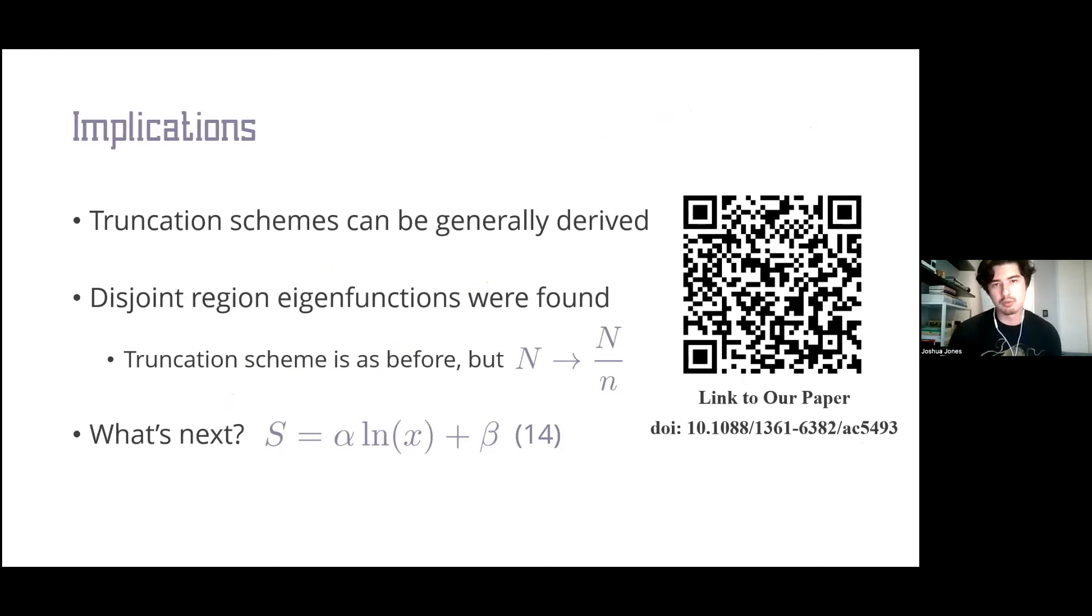If we can solve the eigenfunction equation for the Pauli-Jordan function in the continuum case, we can derive the truncation scheme necessary for the treatment of regions of that shape in the causal set. Not only can we do that, we can treat disjoint regions of that shape. This is particularly exciting because even if you're not a causal set theorist, such calculations are very difficult to do analytically in the continuum. The causal set calculations could potentially help find the analytic solutions by first numerically finding these scalings.